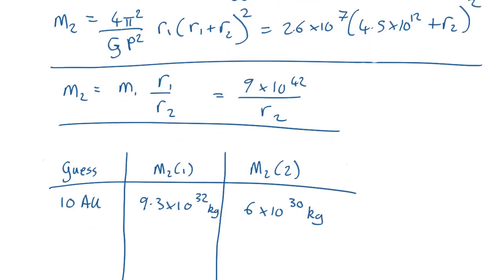So it looks like we need a smaller value so let's try one astronomical unit and now this has gone down to 5.6 by 10 to the 32 kilograms, a little bit smaller, but this has gone up to 6 by 10 to the 31 kilograms, so they're getting closer. They're now only 10 times different whereas up here they're more than 100 times different.